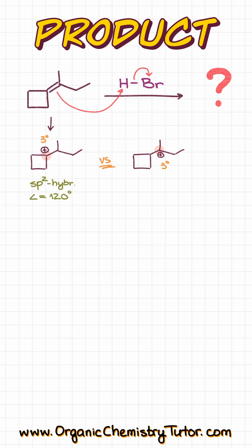However, here we're squeezing it to 90 degrees in this four-membered ring, which is going to make it extremely unstable, meaning that I'm going to discard my left carbocation and I'm going to proceed with my carbocation on the right side.